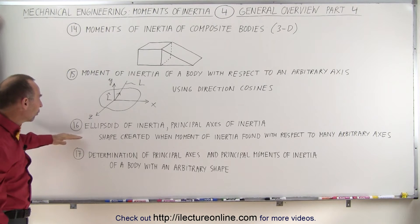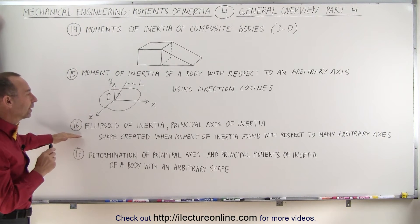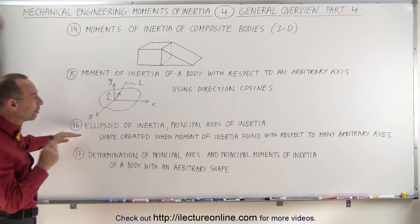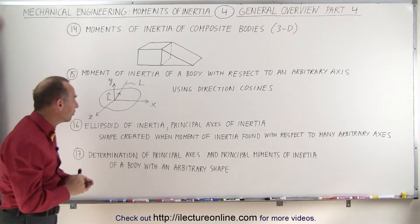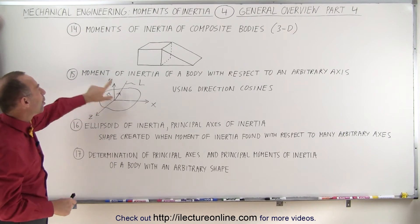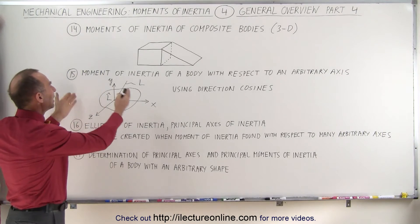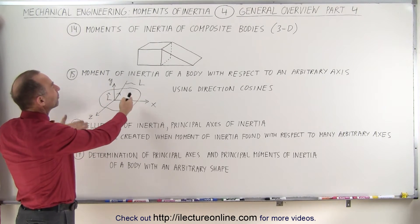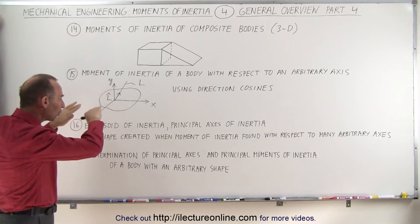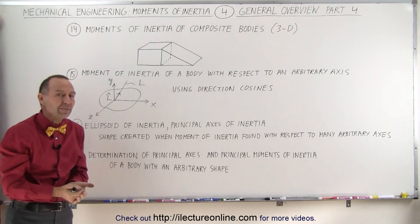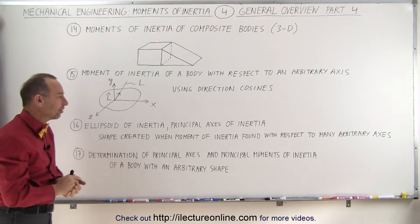We're also going to find what we call the ellipsoid of inertia and the principal axes of inertia. What that means is, if we find the moment of inertia of many — almost an infinite number — of these arbitrary axes, we're going to end up with an ellipsoid shape. We'll see what the significance of that is.